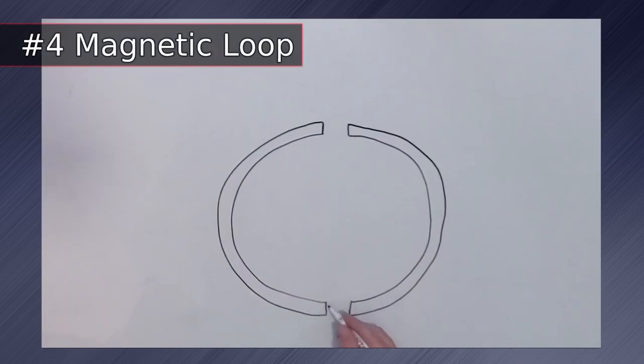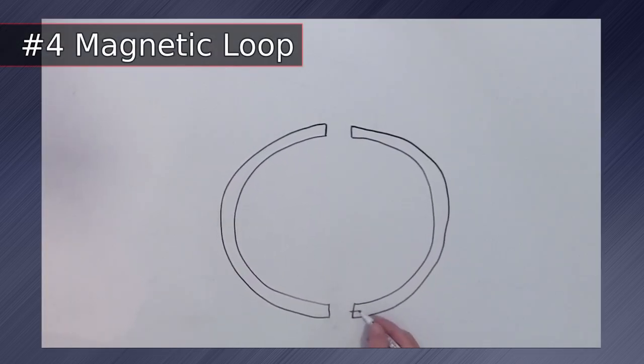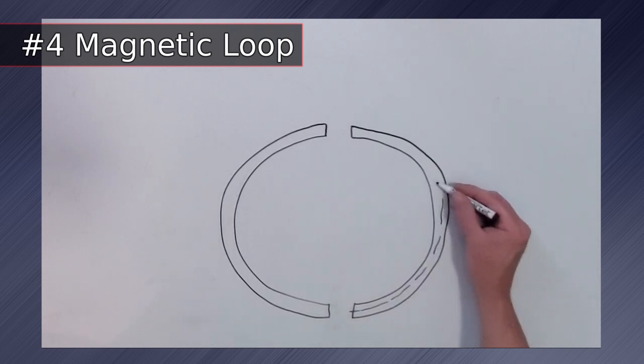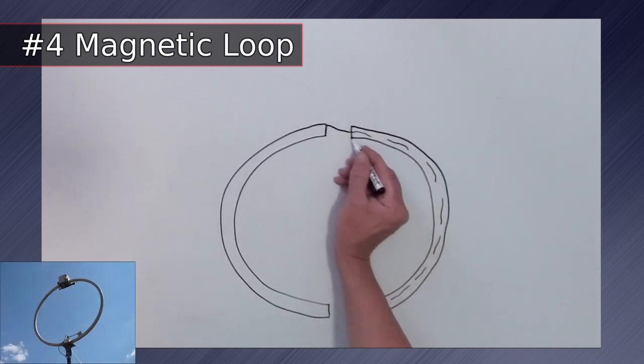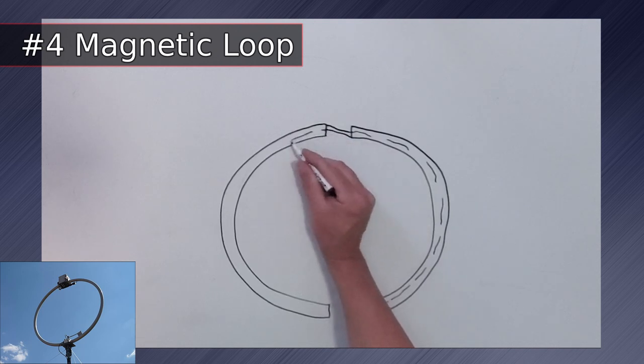Coming in at number 4 is the magnetic loop antenna. There are many variations of this antenna, but the benefits are the same. Its small size makes it easy to deploy. It can also be hidden in an attic if you have deed restrictions.